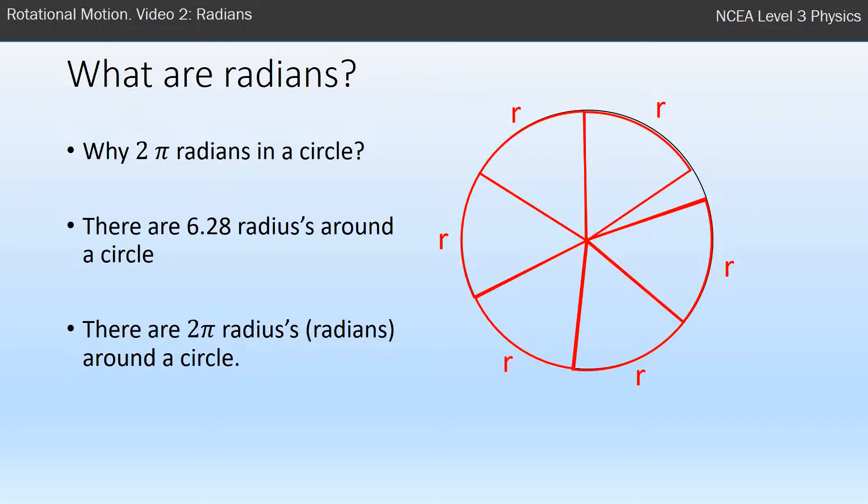So it turns out the exact number is 6.28 radiuses around one circle. And if you say that in terms of π instead of saying 6.28, you say 2π radiuses around a circle, and that's where the word radians comes from. It's how many radiuses you can fit around that circle. So there's 2π radians in a circle.